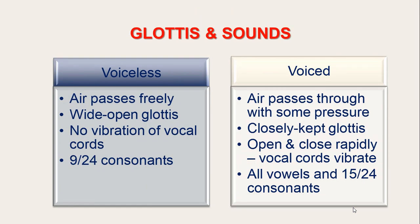So we have two types of sounds — voiceless and voiced — depending upon the vibration of the vocal cords. Voiceless sounds are produced when air passes freely through the wide open glottis with no vibration of the vocal cords. Voiced sounds are produced when the vocal cords open and close rapidly. All vowels in English are voiced, and out of the 24 consonants, 15 consonants are voiced.